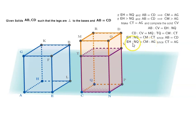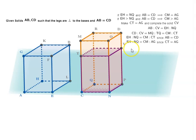If EH is greater than NQ, then CM is greater than AG. That is what is meant by reciprocally proportional.